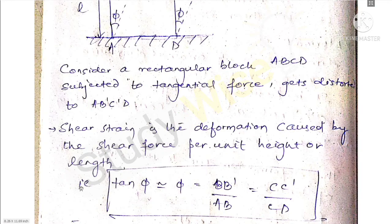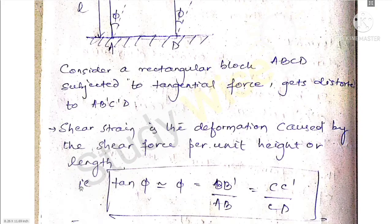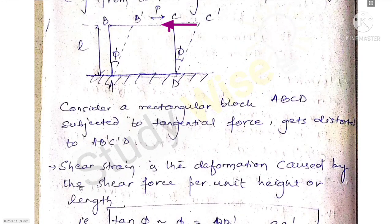The rectangle ABCD distorts to parallelogram AB'C'D. Shear strain is the deformation caused by the shear force per unit height or length, that is tan φ, which can be taken as φ = BB' upon AB, which is similar to CC' upon CD.